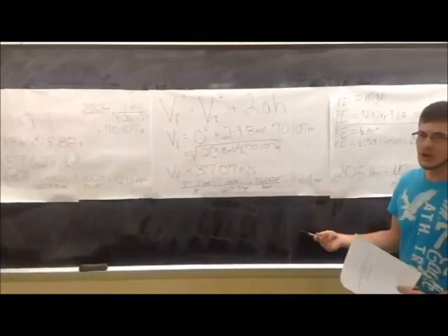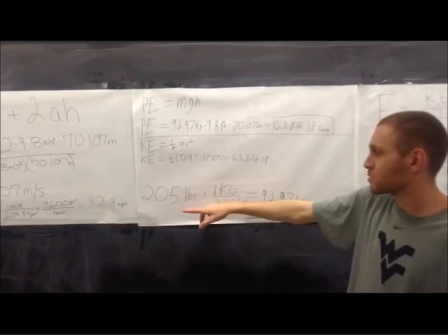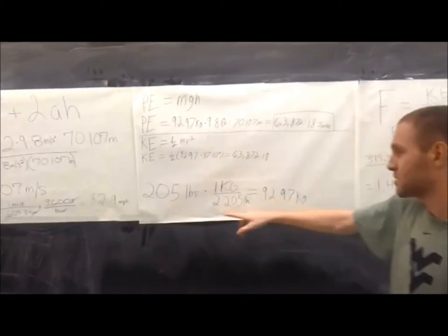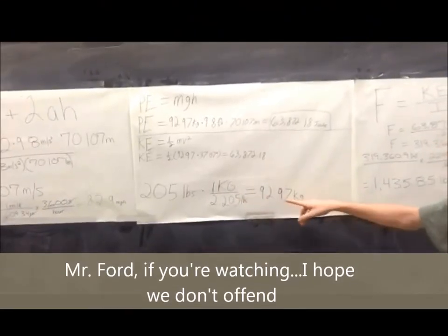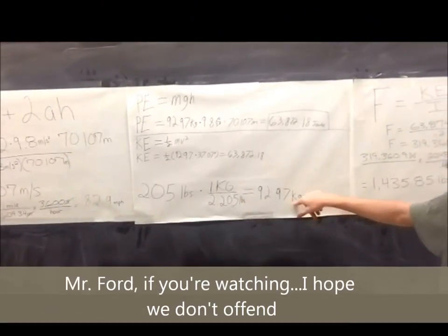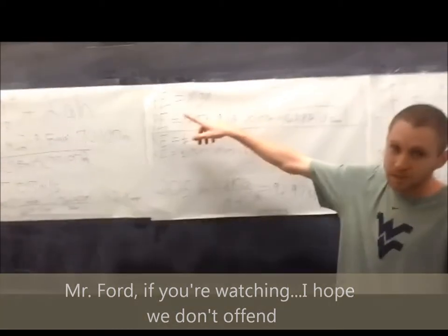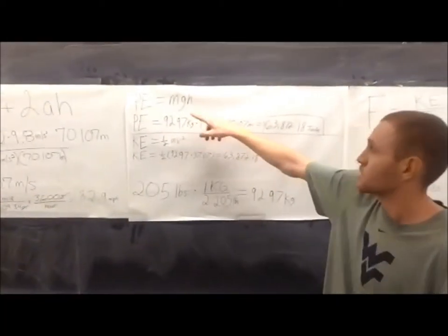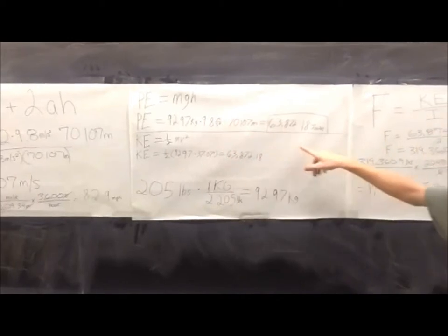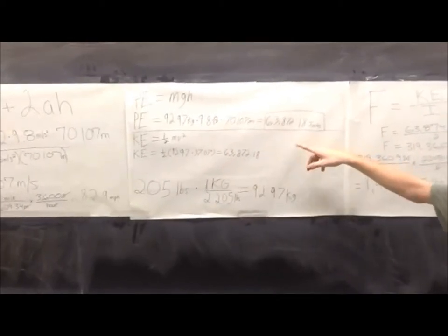We Googled Harrison Ford's weight to get 205 pounds, and we converted that to kilograms right here, and then we used that to find the potential energy of him falling off the dam. It's just mass times gravity times his height, and it came out to just over 63,000 joules.